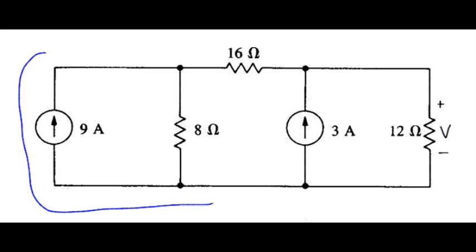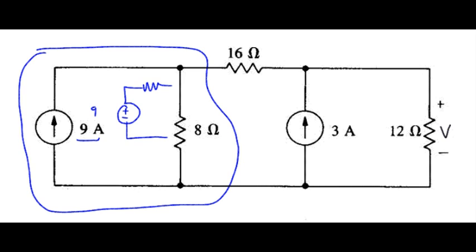So I'll start with our current source connected to a resistor. This can be simplified, or transformed into a voltage source in series with a resistor such that we would have the current 9 times the resistance 8. So we'd have 72 volts here and 8 ohms right there. So I'm going to go ahead and swap out the voltage source resistor combination with the current source parallel resistor combination.